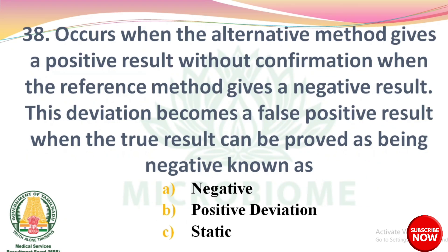Next question: It occurs when the alternative method gives a positive result without confirmation, when the reference method gives a negative result. This deviation becomes a false positive result when the true result can be proved as being negative. Options: negative, positive deviation, static. The right answer is option B: positive deviation.